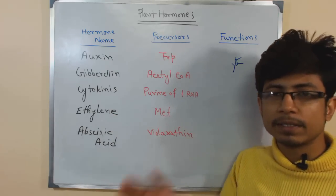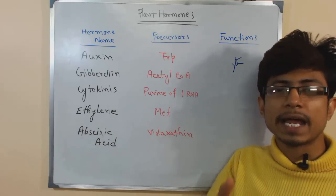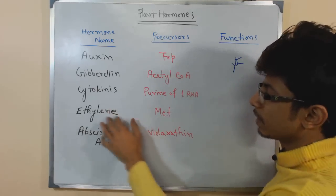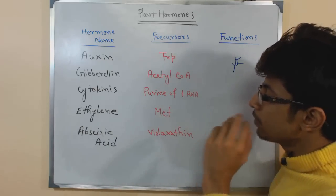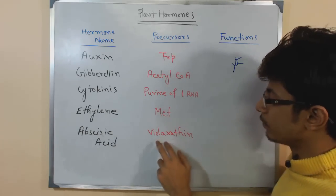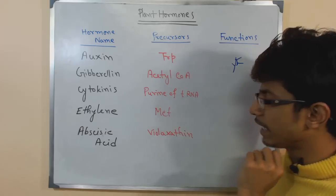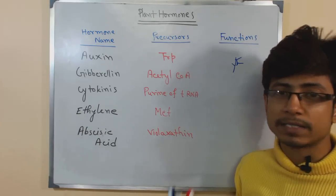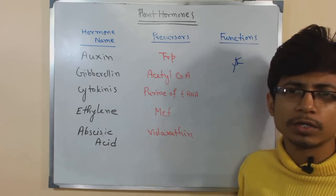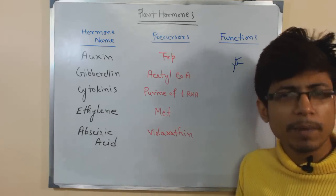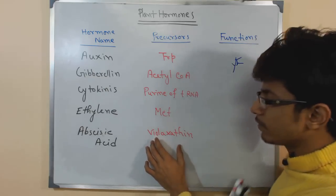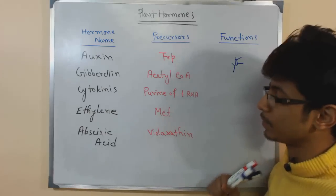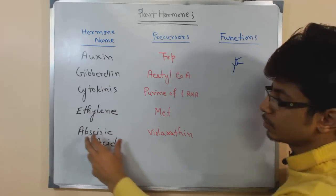Ethylene contributes to senescence — leaves falling and abscission processes. The fifth hormone is abscisic acid, and its precursor is violaxanthin. Violaxanthin is a type of xanthophyll present in the xanthoplast in plant cells. From violaxanthin, abscisic acid is produced.